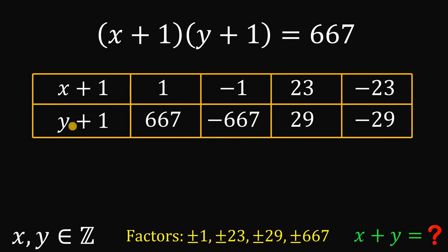Can be 1 and 667. x plus 1 can be negative 1, and y plus 1 can be negative 667. And when we multiply this, we get 667. And it doesn't matter what is the value of x plus 1 and y plus 1, because don't forget our goal. Our goal is the sum of x plus y.